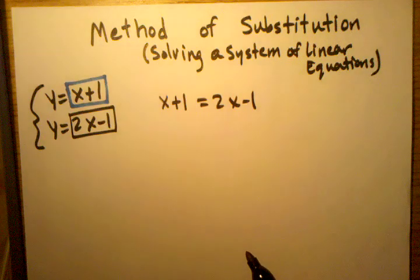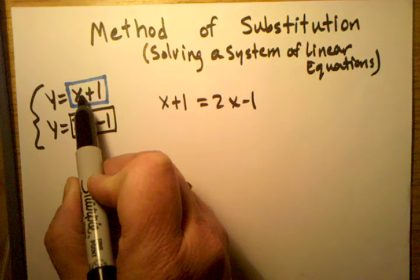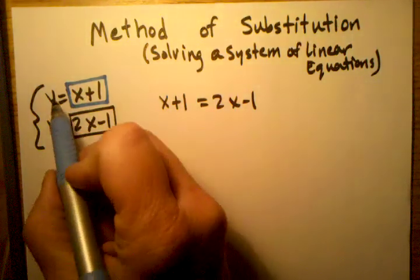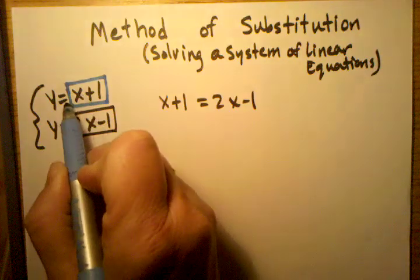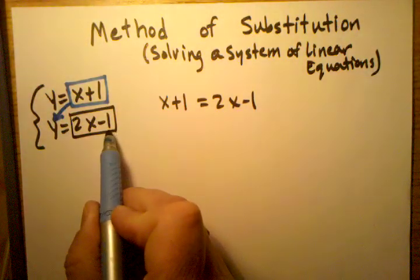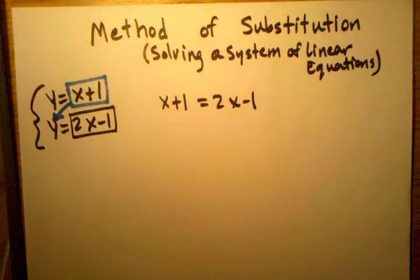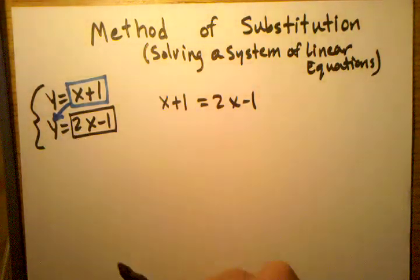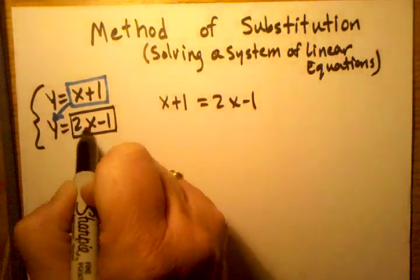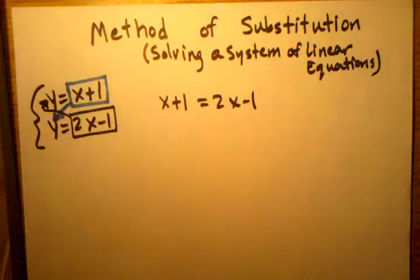But another way to think about it is basically if y equals this up here, which is x plus 1, why couldn't I say then that I'm going to substitute x plus 1 in for this y in this equation? And when I do, I'll write x plus 1 equals 2x minus 1. Or if I want to, it doesn't matter, I can do it the other way around. I can say if y equals 2x minus 1, then why don't I take what y equals in this equation and plug it in to that y in that equation?